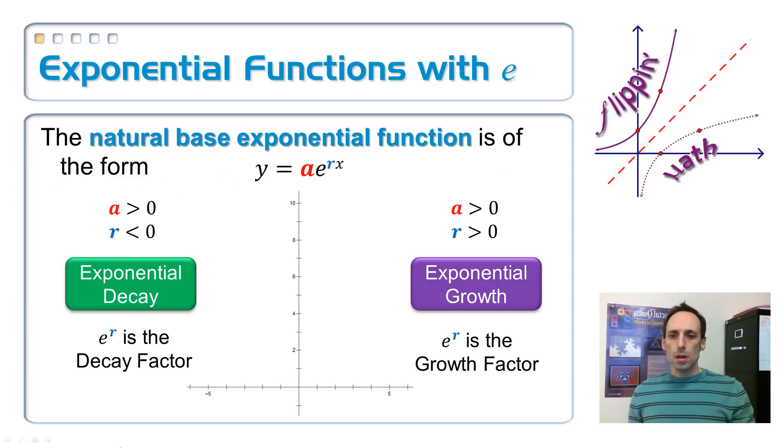So then the natural base, we can use that E as the base of an exponential function. And when you do, it's called the natural base exponential function. So it's Y equals A times E to the RX. E is the base. It's that 2.718 blah, blah, blah stuff. And then R is the exponent.